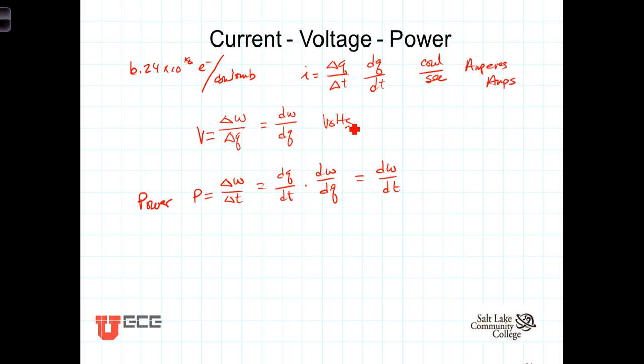We recognize that dQ/dT is just I, and dW/dQ is just V. And we have, then, power in an electrical system is equal to the current times the voltage.